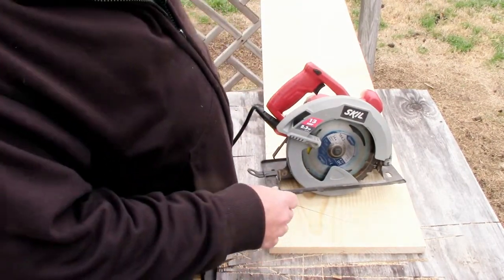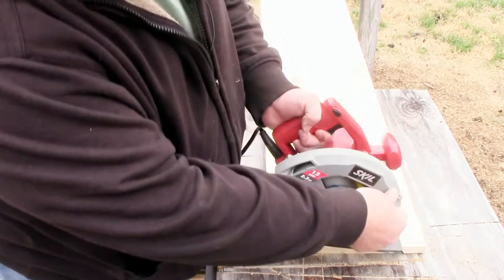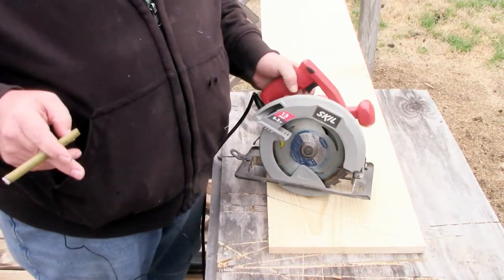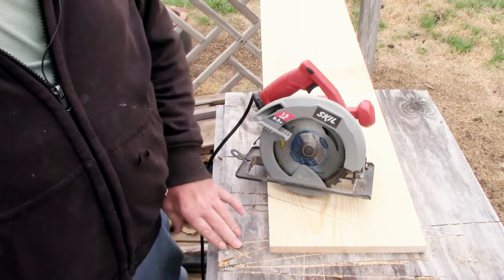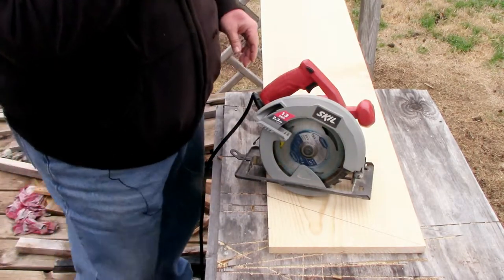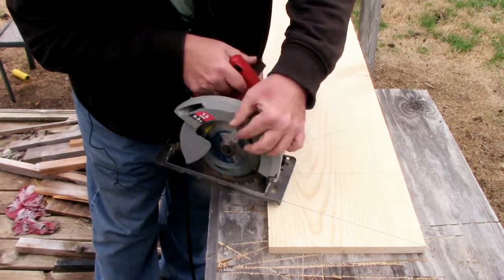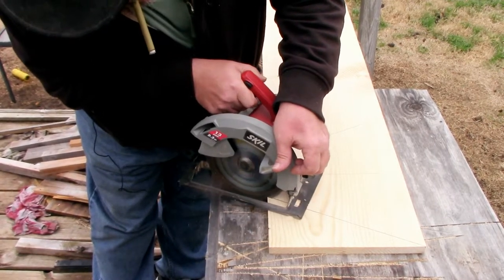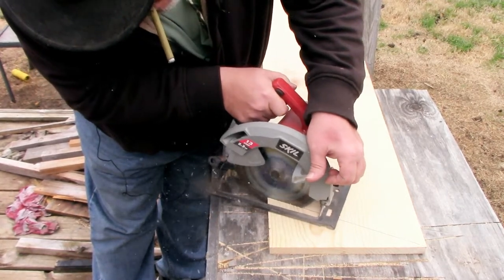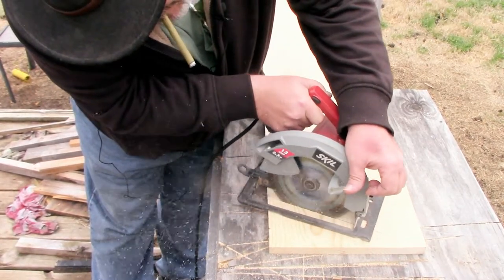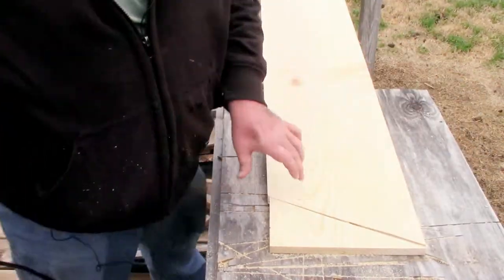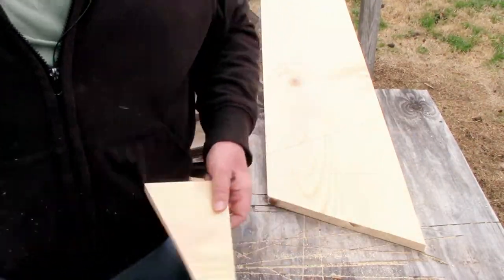For this cut we are going to use a standard circular saw, sometimes referred to as a skill saw. The way I like to set this up is so that it's just slightly thicker than the board. This is scrap wood so I don't care if I cut into it.